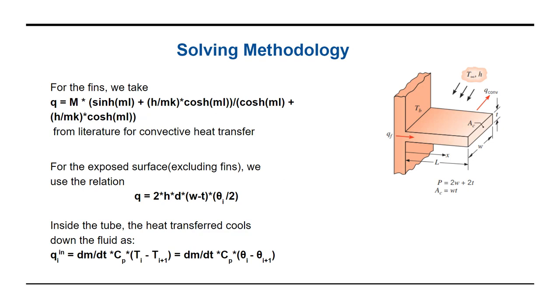For the exposed surface that is excluding fins, we use the relation that is mentioned here: q is equal to 2 times h into d into w minus t multiplied by theta i divided by 2. Thus the total heat transfer rate out will be the sum of these two values.